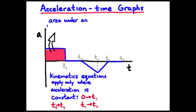The area under the AT curve — what would it give? Checking units: length in meters per second squared times width in seconds gives meters per second — that sounds like velocity. In fact, the area under an AT curve gives the change in velocity. For example, if at T equals zero I was traveling at 10 meters per second, and my area was 4 meters per second, then at T1 I'd be traveling at 14 meters per second.